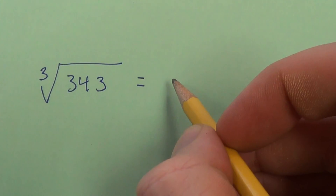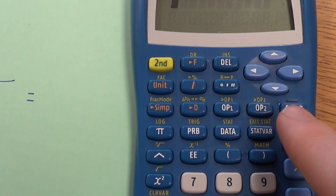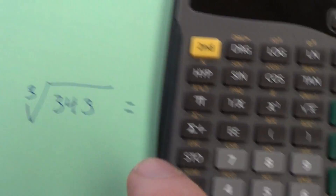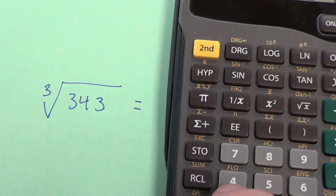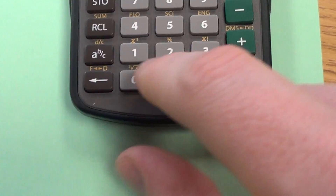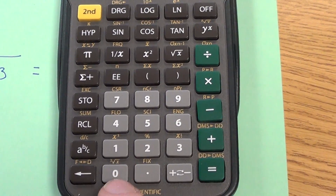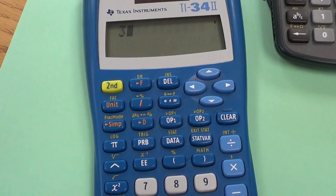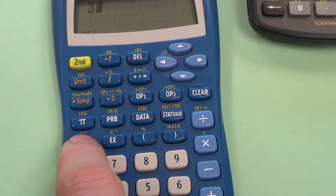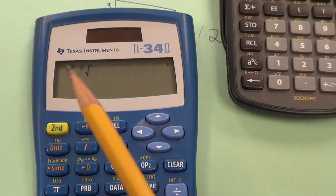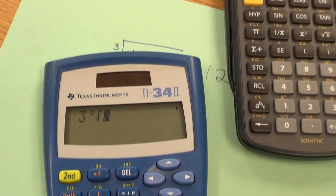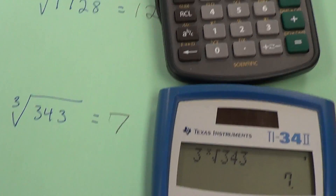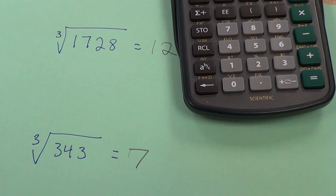On this last example I have the cubed root of 343. On the blue calculator I type 343, then hit second and zero, and I get the cube root, which is 7. On the other calculator I have to say 3 first, then second and the exponent button, then type 343 — and I still get 7. So that is cube rooting. Hope this helped, see you in class!